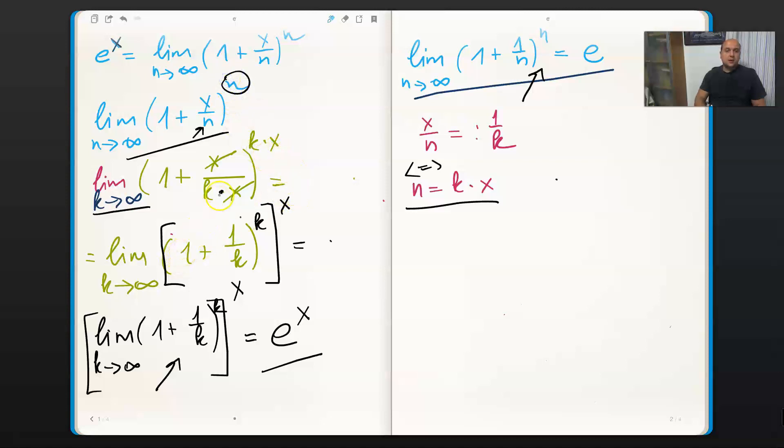And once we've done that and we've cancelled, we have k towards infinity, 1 plus 1 divided by k to the power of k only. And then I can take x outside of the parentheses because of the power rules.